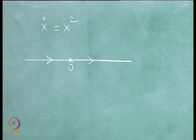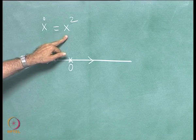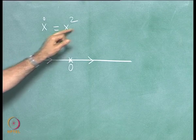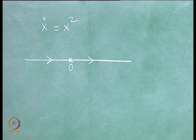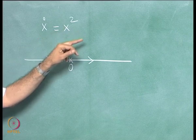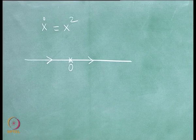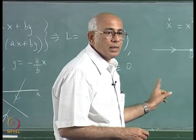The higher-order critical point arises because x-squared is not a generic polynomial on the right-hand side. A generic polynomial expanded in powers of x about the origin starts as a₀ plus a₁x plus a₂x² and so on. Unless you have a special accident where a₀ and a₁ are both zero, you never start with the x-squared term. A constant can always be absorbed by shifting x, so the linear term is effectively missing.